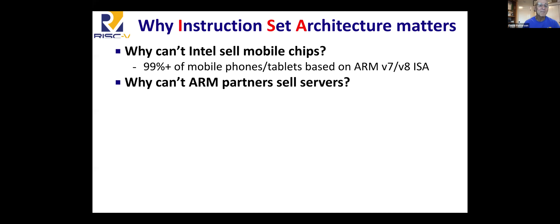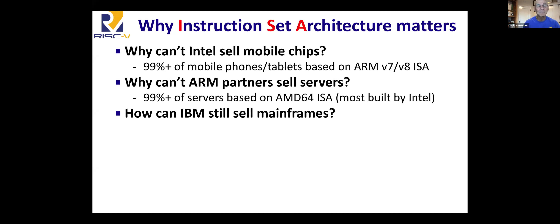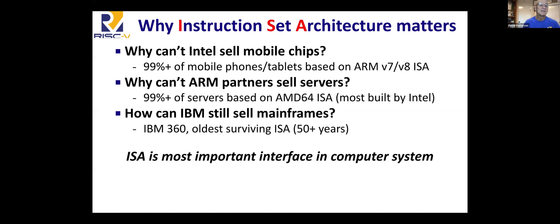So Intel builds most of the servers. And IBM, which is no longer the computer powerhouse, still sells $10 billion a year in mainframes. Why is that? It's still this IBM 360 instruction set, the oldest surviving instruction set — I think it's 57 years old and it shows no signs of stopping. The instruction set architecture is actually the most important interface in the computer, because it's where hardware talks to software. When software speaks to hardware, it has a vocabulary, and the name of that vocabulary is an instruction set, and the words of that vocabulary are instructions.